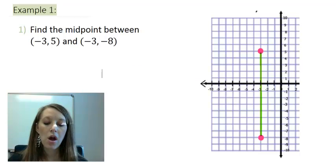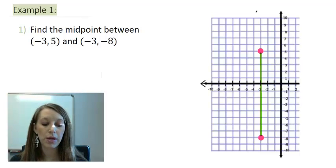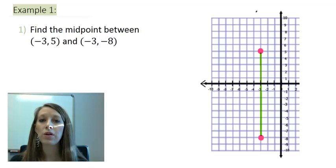So let me just jump right into an example. I have example 1 here. We want to find the midpoint between the ordered pair negative 3, 5, and negative 3, negative 8. Now this is a very simple example, so I believe that you can be able to do this on your own without me giving you any indication how. So I suggest that you pause the video and see what answer you come up with.